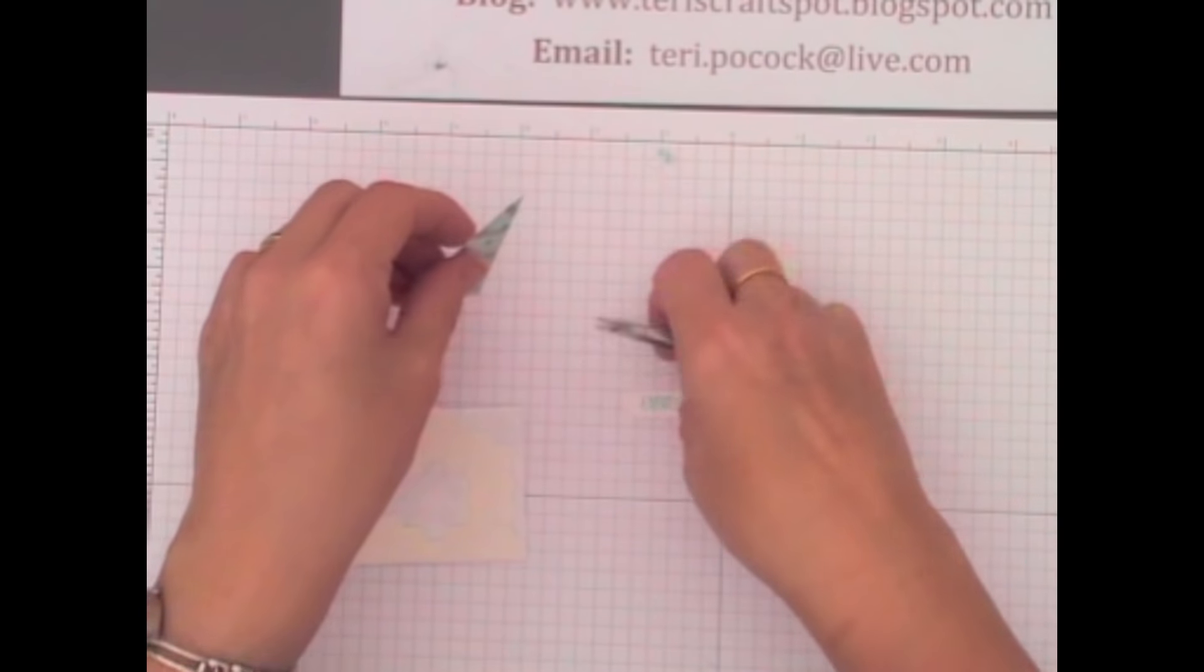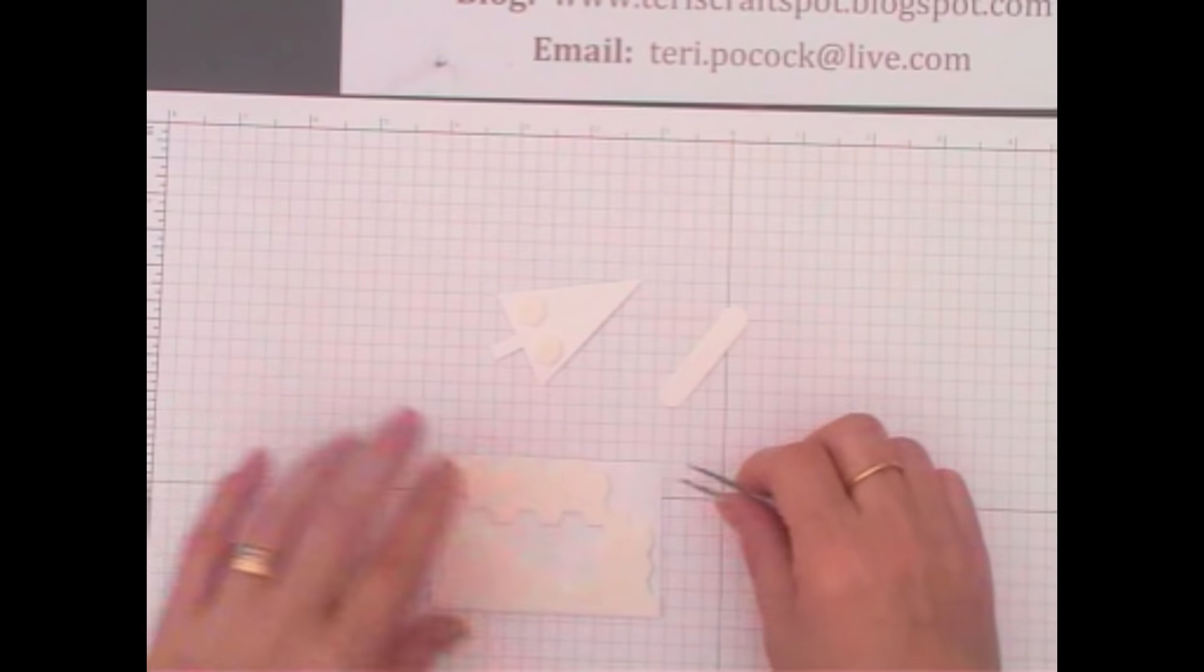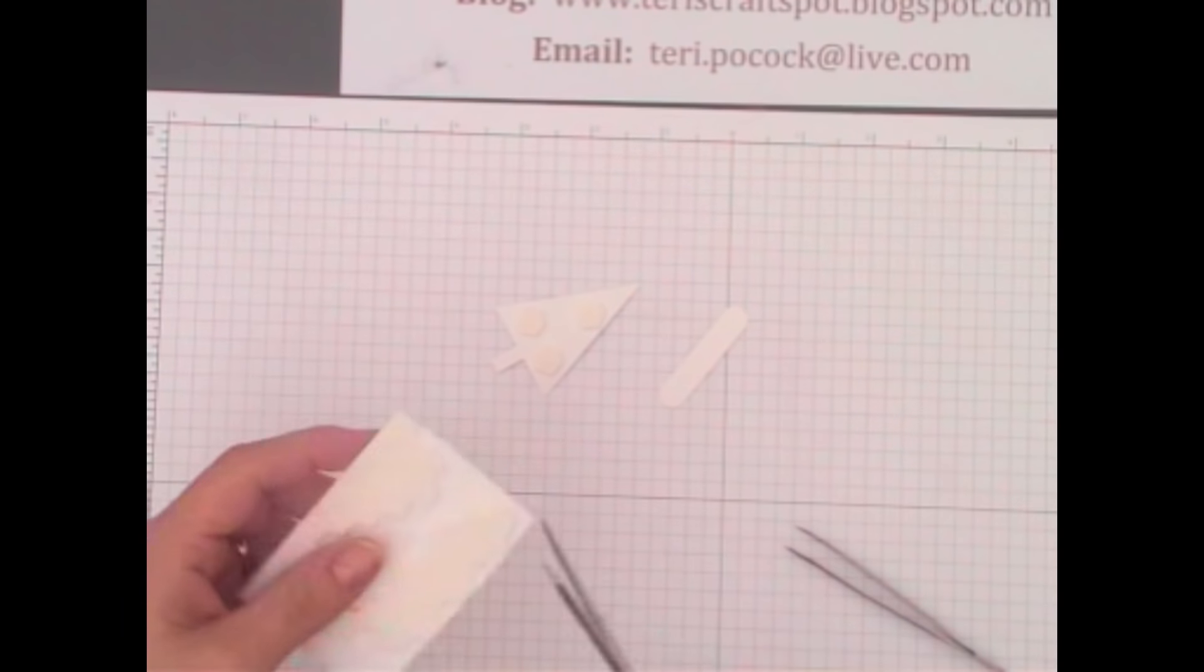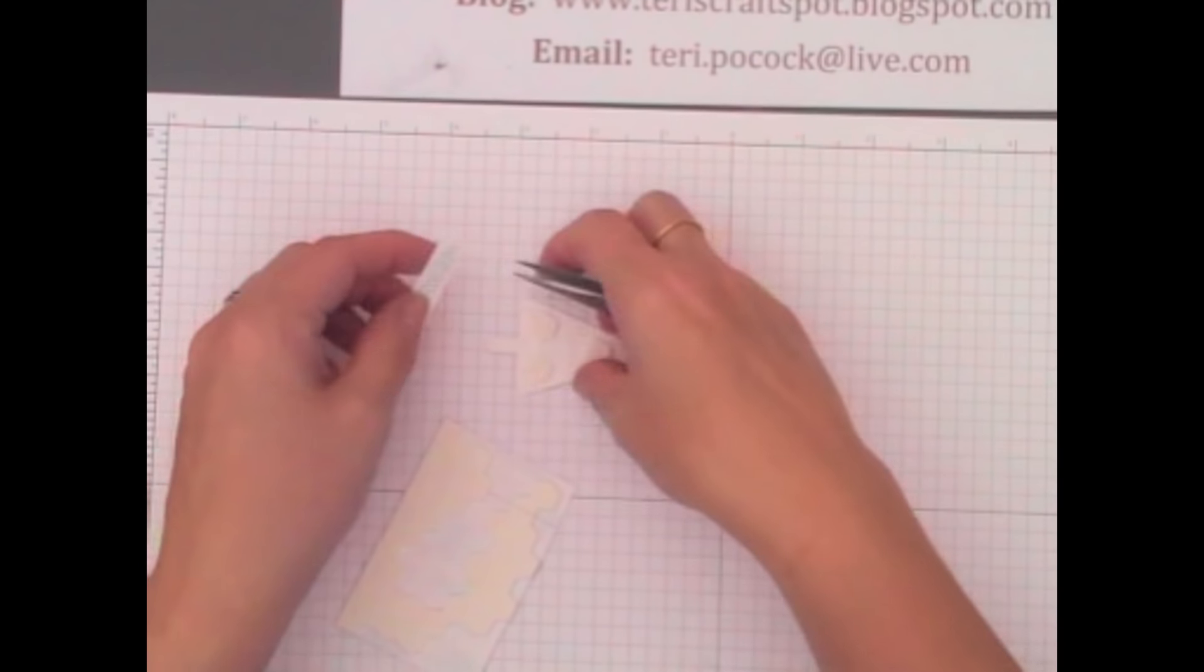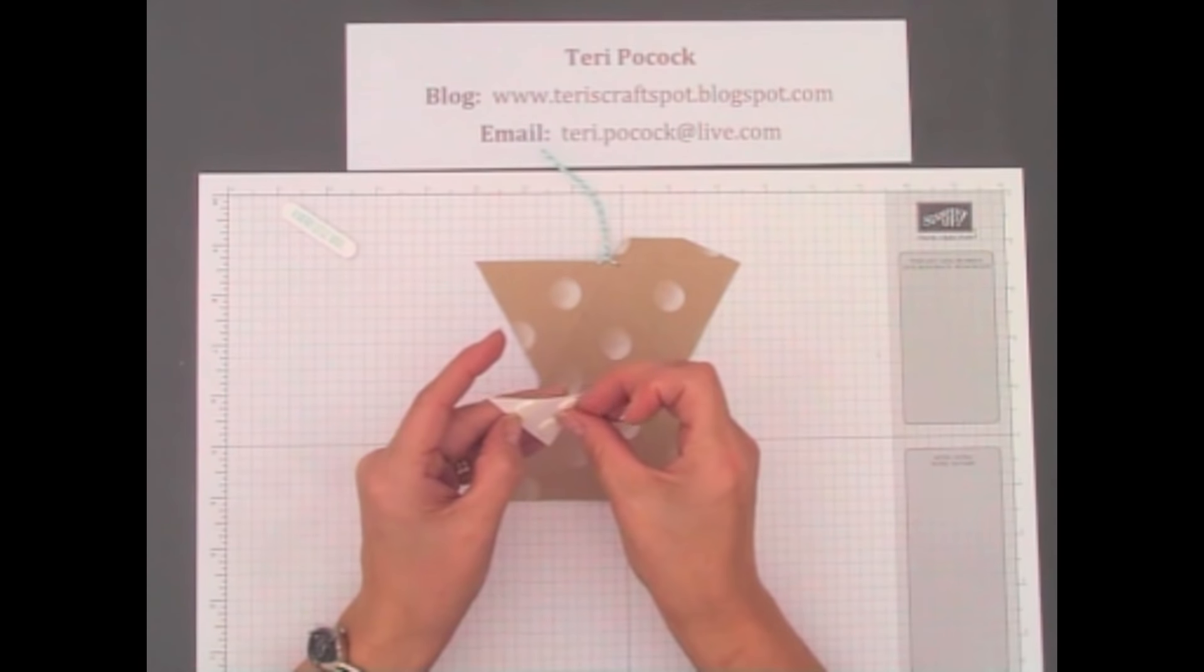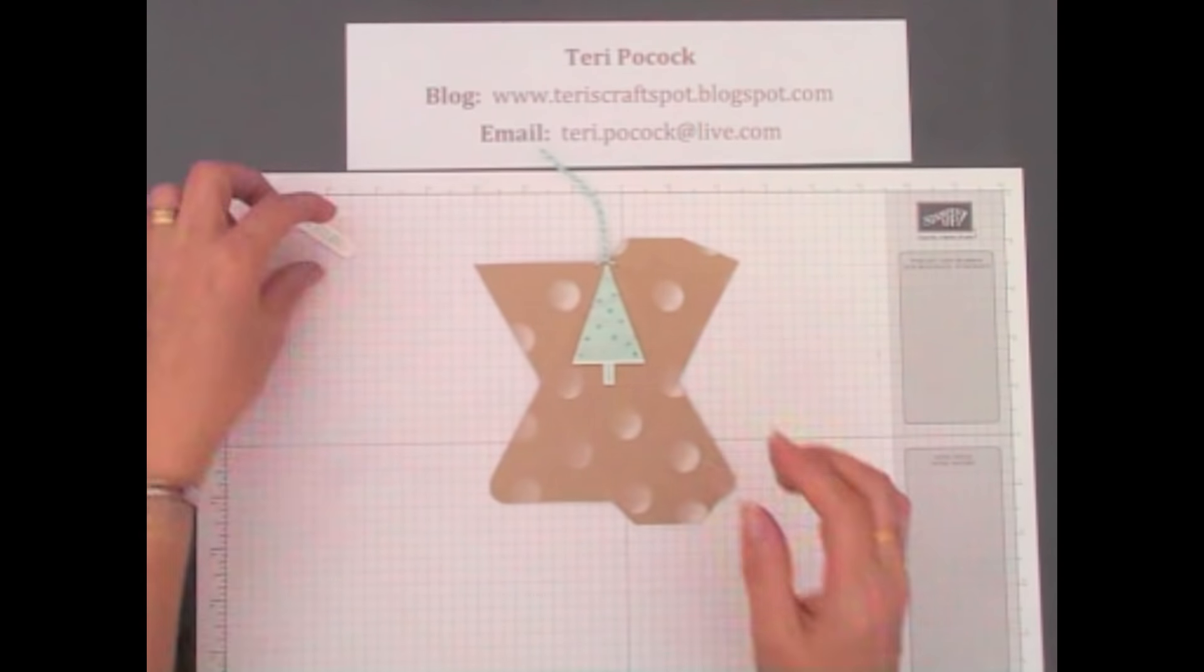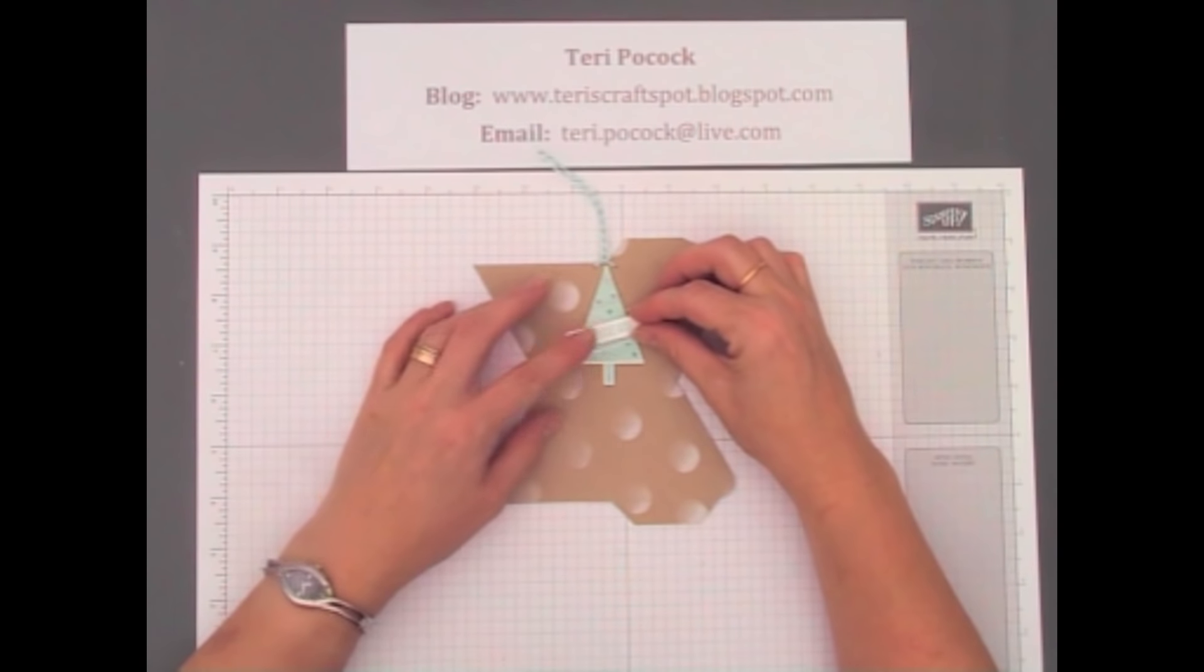And that's ready to go on my box. Now we can put our decoration onto our box. So if you remove the backing from the dimensionals and centre that on the middle triangle. And then our sentiment is just going to go across our tree like that.